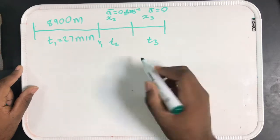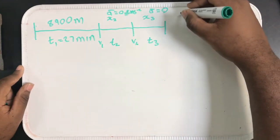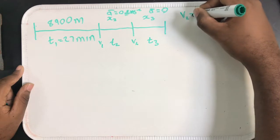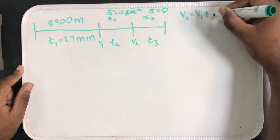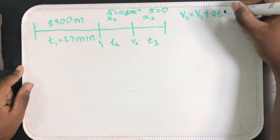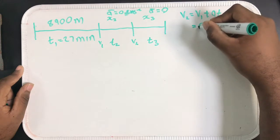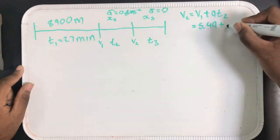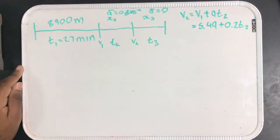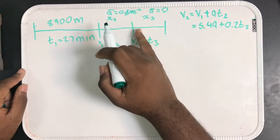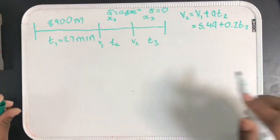And we know a few things. We know that he has some v1 here and right here he has some v2, and we can find this. We know that v2 is equal to v1 plus the acceleration a times t2, the time that he accelerated. So this is 5.49 plus 0.2 times that time t2. And we know that this v2 is going to be the same for this stretch of the journey right here because we're assuming that he has no acceleration here.